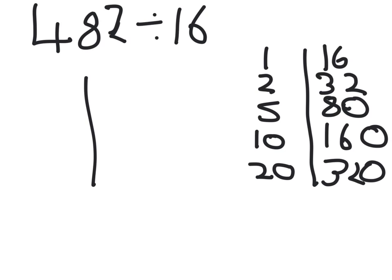Next we're going to draw a grid with 3 columns along. We're going to write times 16 in this one, 482 and remainder.